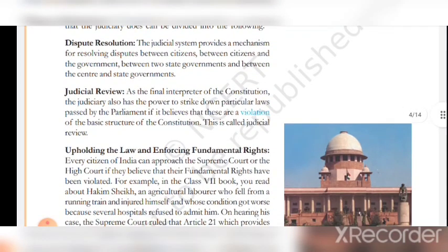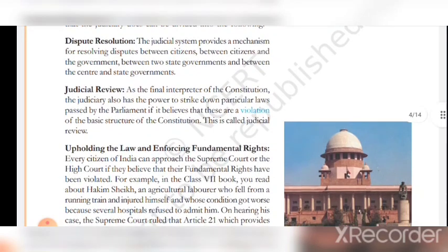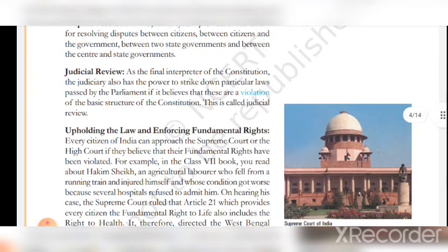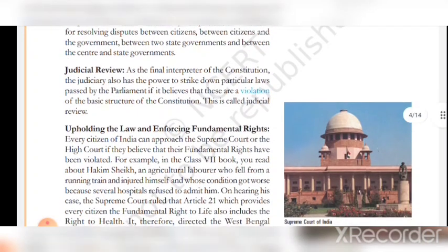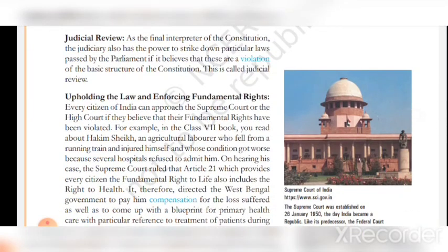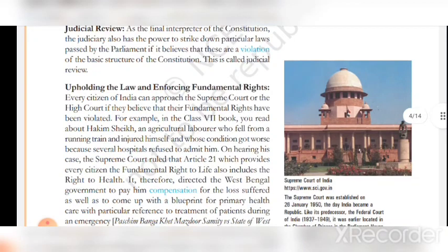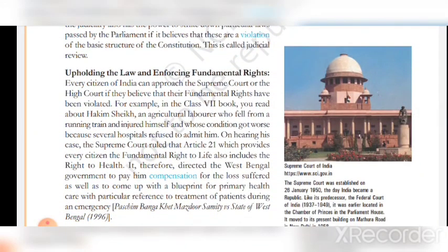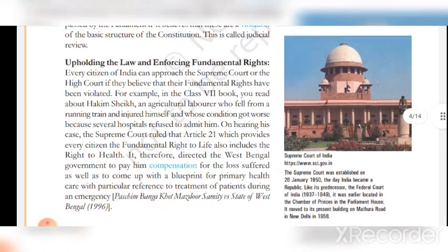Dispute Resolution: The judicial system provides a mechanism for resolving disputes between citizens, between citizens and the government, between two state governments, and between the center and state governments. Judicial Review: As the final interpreter of the constitution, the judiciary also has the power to strike down particular laws passed by the parliament if it is believed that these are violations of the basic structure of the constitution.